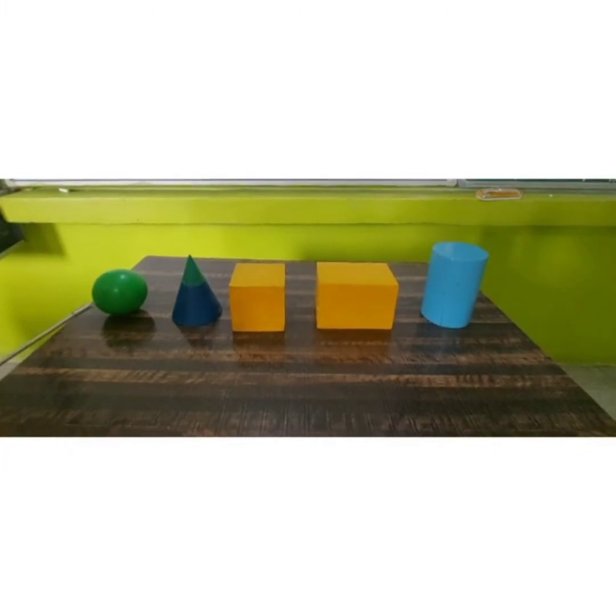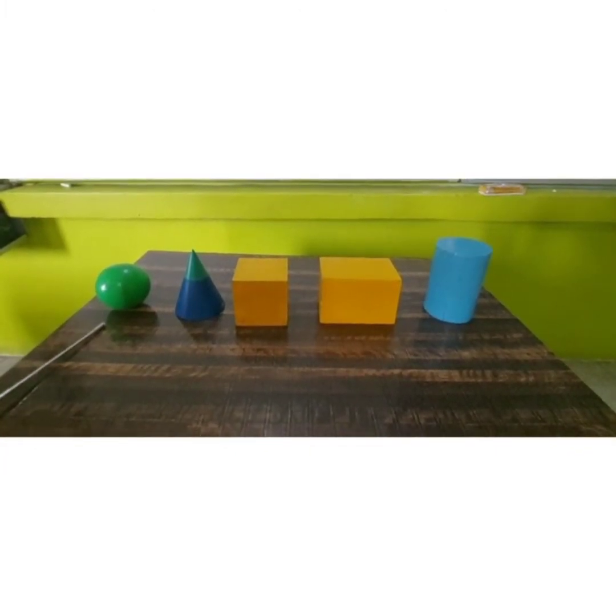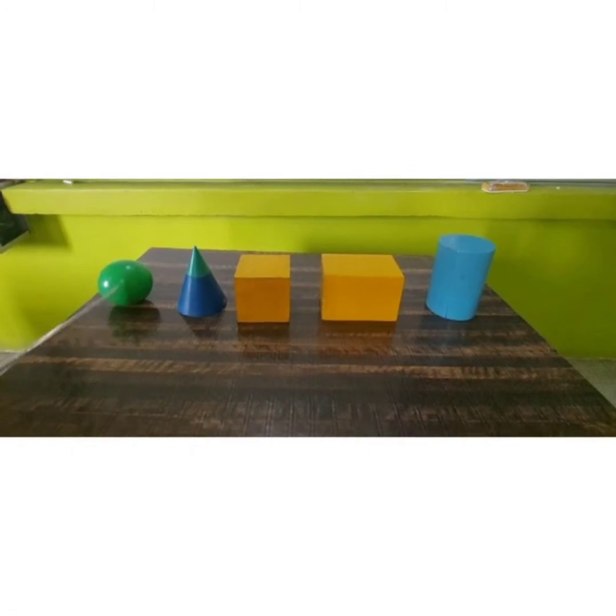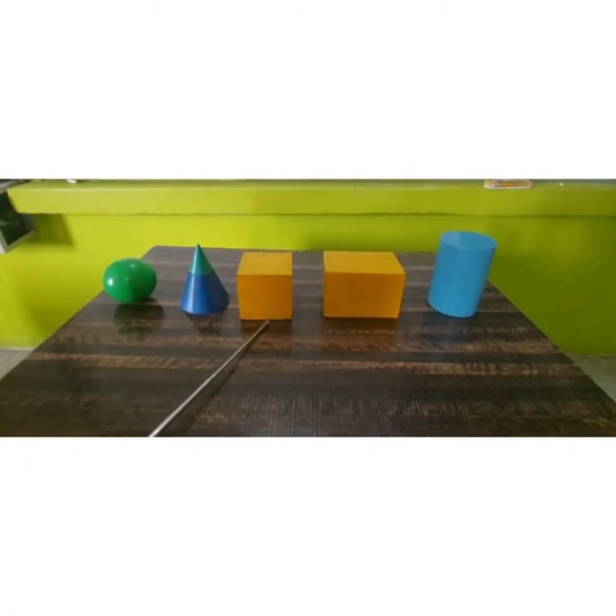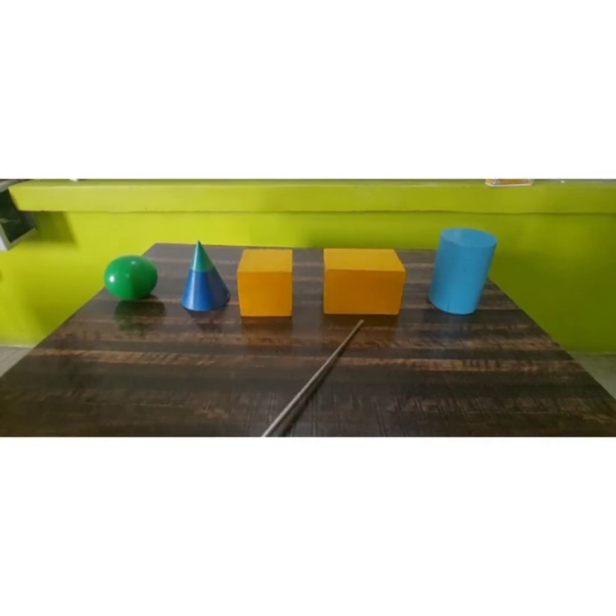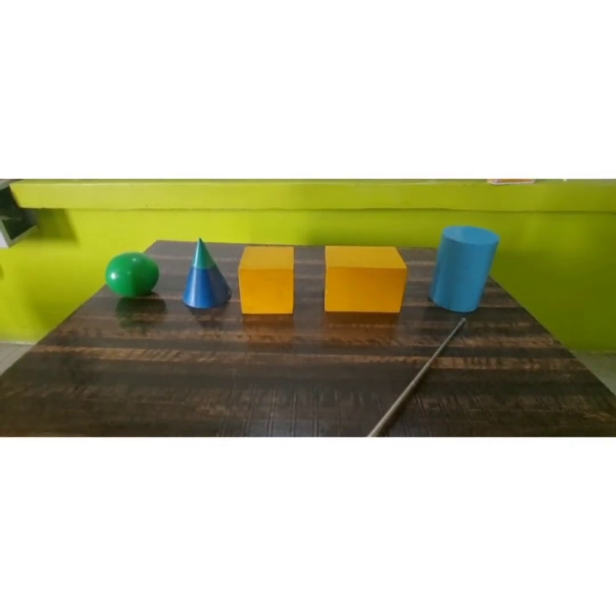Let us talk about 3D shapes. First 3D shape is sphere, second one is cone, third one is cube, fourth one is cuboid and the fifth one is cylinder.